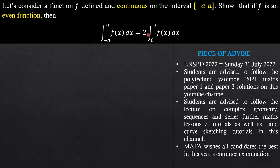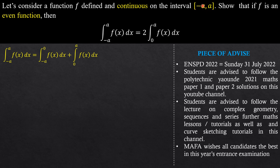The integral from −a to a of f(x) dx equals the integral from −a to 0 of f plus the integral from 0 to a of f, because the function is continuous throughout the interval — there is no point of discontinuity. If the function were discontinuous at some point in this interval, this split would not be possible.